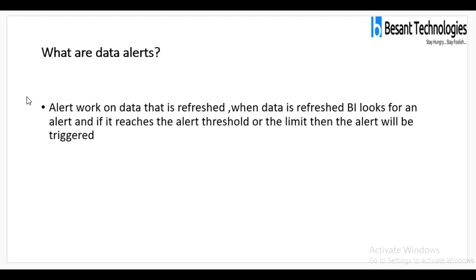What are data alerts? Alerts work on data that is refreshed. When data is refreshed, Power BI looks for an alert, and if it reaches the threshold limit, the alert will be triggered. For instance, if you have a graph and certain data points go below a certain value, you get an alert indicating they should be taken care of. You can set alerts to certain thresholds so you are notified when certain points go below or above those limits.